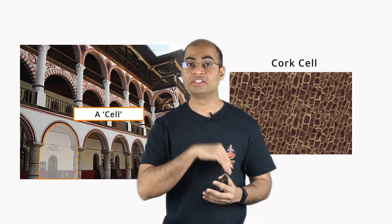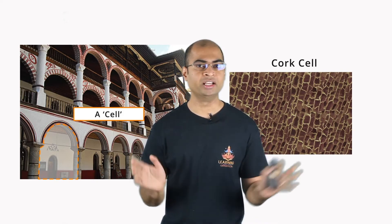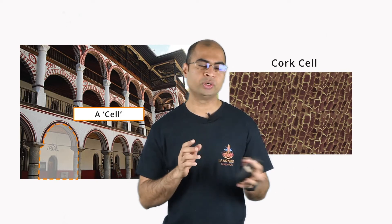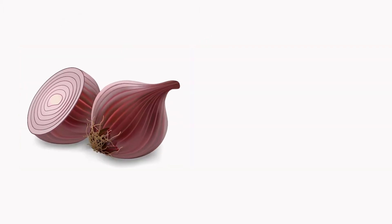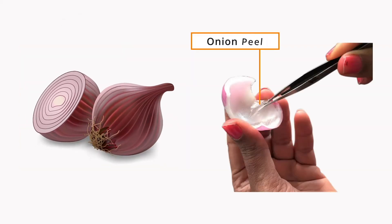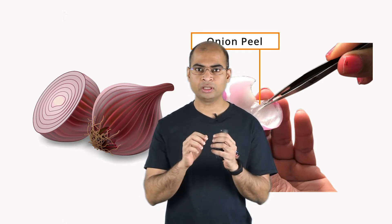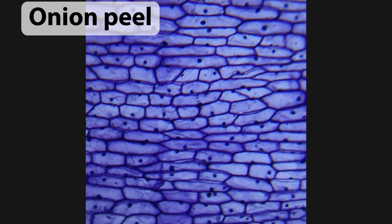Okay, enough history. I won't keep you waiting any longer. Let's start looking at a few different cells for ourselves. Let's start with an onion peel. If I take a thin slice of the onion peel and enlarge it under the microscope, say 100 or 200 times, this is what you will see.